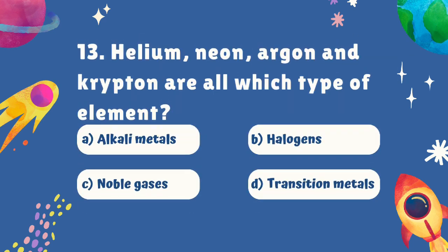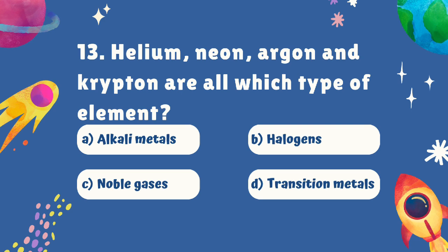Question number thirteen. Helium, neon, argon, and krypton are all which type of element? Is it A. Alkali metals, B. Halogens, C. Noble gases, or D. Transition metals? The correct answer is C. Noble gases.